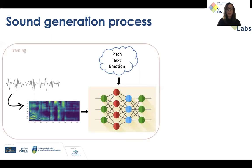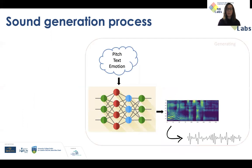After we create these representations, we can feed them into a neural network, along with the pitch, text, or even emotion, depending on the type of application that we want to create. When the network is trained, we can generate new representations that have specific properties, and then find a way to go back to the original waveform using some signal processing techniques, or even another neural network.